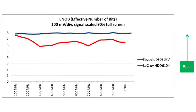The next graph shows effective number of bits, commonly referred to as ENOB. ENOB combines a variety of different vertical as well as horizontal attributes to give you a feel for the effective number of bits that the oscilloscope provides. As you can see from this graph, the Agilent S-series has a higher ENOB across the entire bandwidth versus the 12-bit LeCroix HDO.